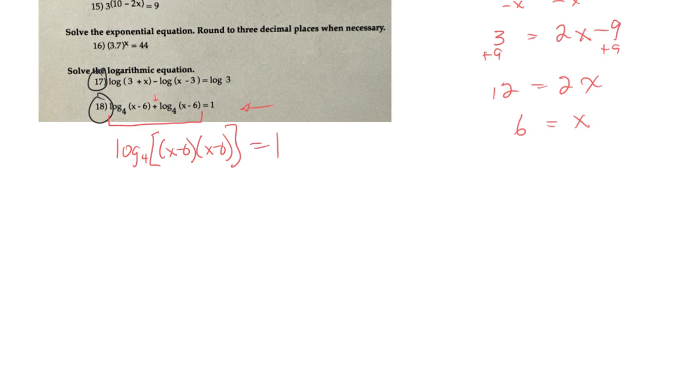Now, I'd like to get rid of that log, but I can't divide each side by log. What I have to do now is change its form from log form to exponential form. Now, since my base here is 4, it'll be 4 to the first equals x minus 6 times x minus 6.